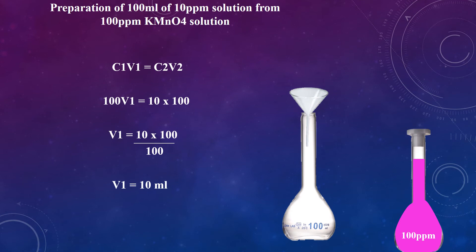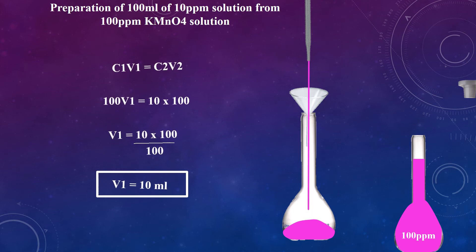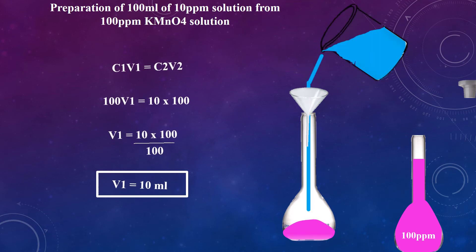Similarly, if you want to prepare 10 ppm, 20 ppm, 30 ppm, 40 ppm, or any other solution of your need after dilution of the 100 ppm solution, you can make it by following the same procedure as discussed for dilution of the 1000 ppm solution. To prepare 100 ml of 10 ppm solution from the 100 ppm solution, take 10 ml from the 100 ppm stock solution of potassium permanganate into a 100 ml measuring flask and dilute the solution up to the mark.